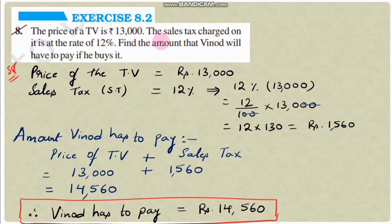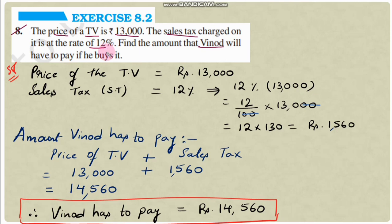Question number 8: The price of a TV is 13,000 rupees. The sales tax charged on it is at the rate of 12%. Find the amount that Vinod will have to pay if he buys it.